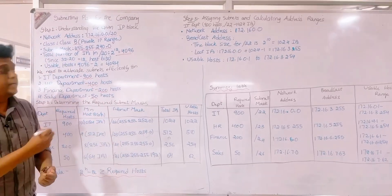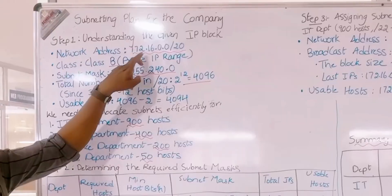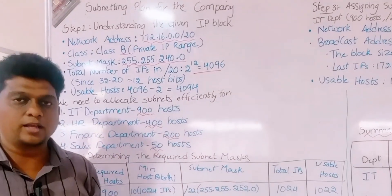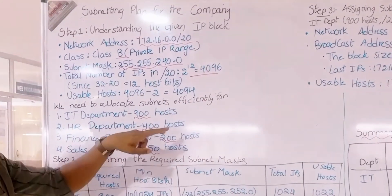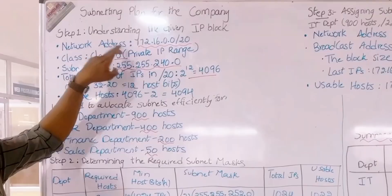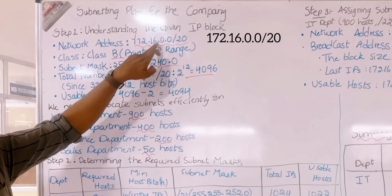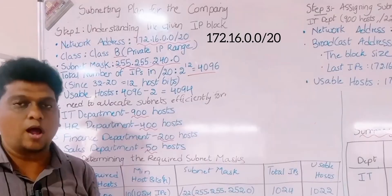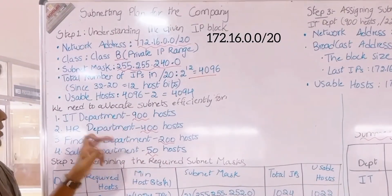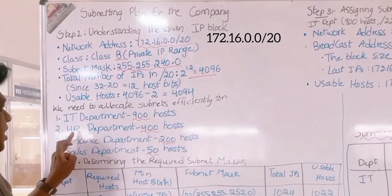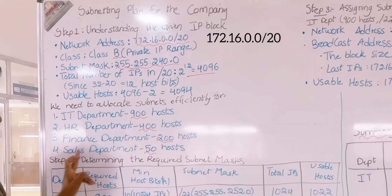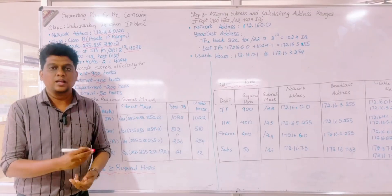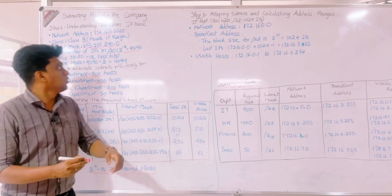Welcome to this video on subnetting plan for an IT company. The network address provided is 172.16.0.0/20. We have to allocate subnets for the following departments: IT requires 900 hosts, HR requires 400, Finance requires 200, and Sales requires 50. The full question has been given in the video description link.